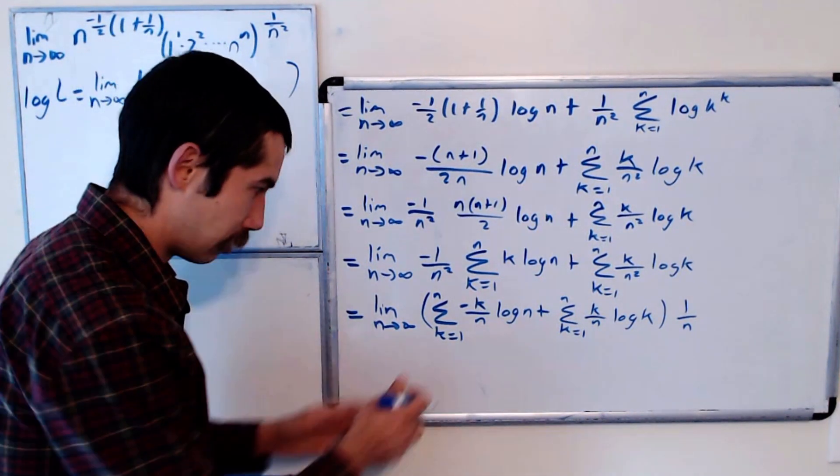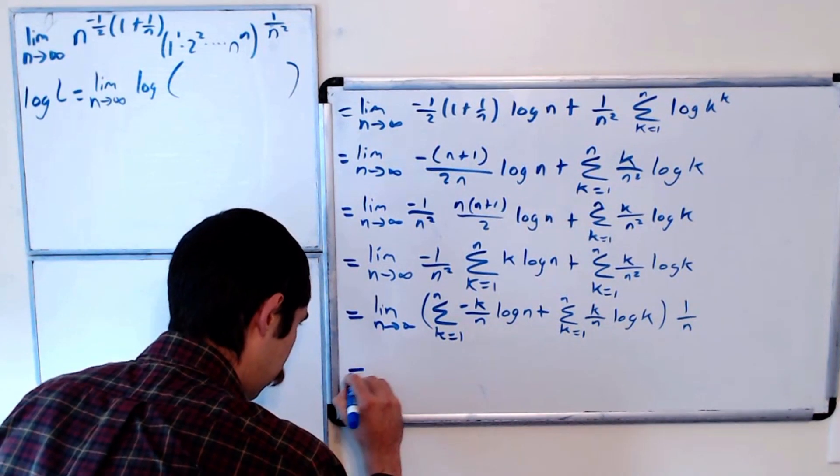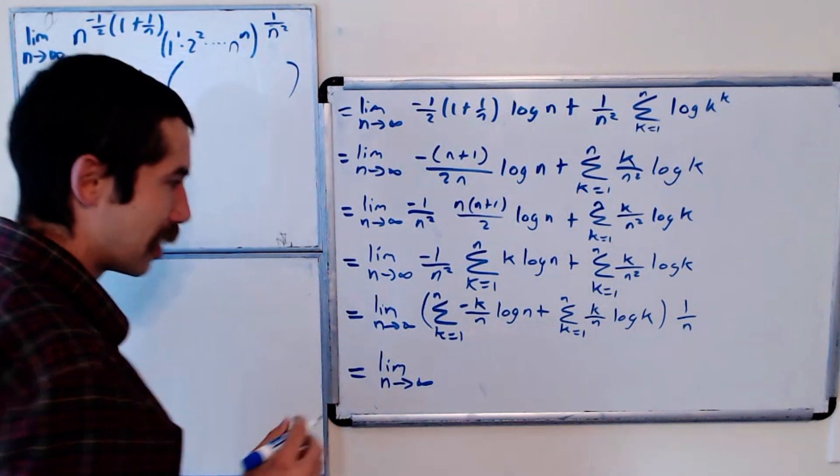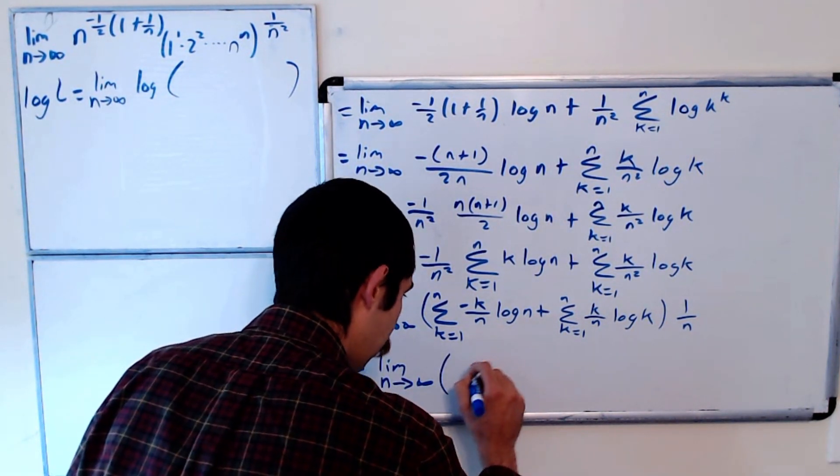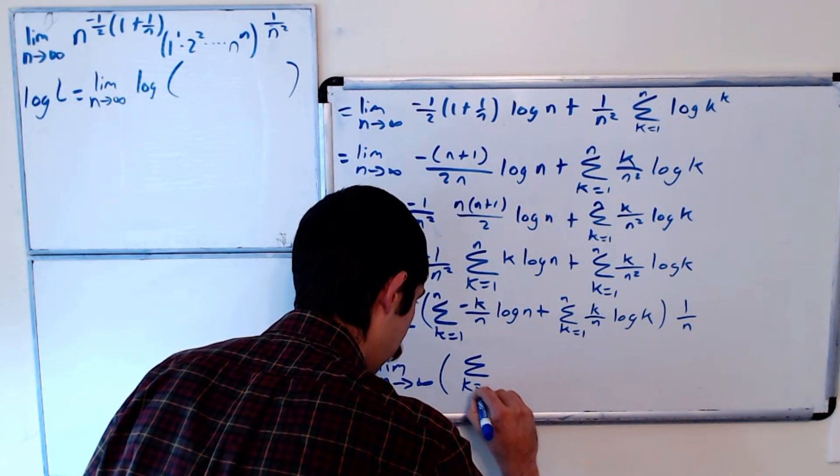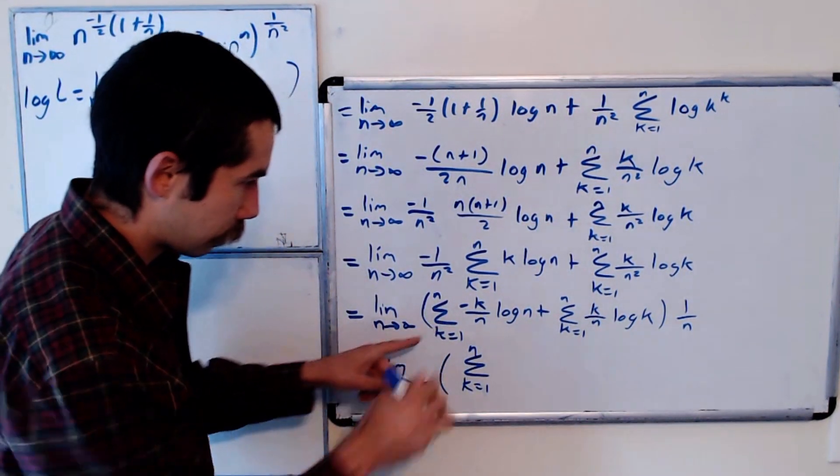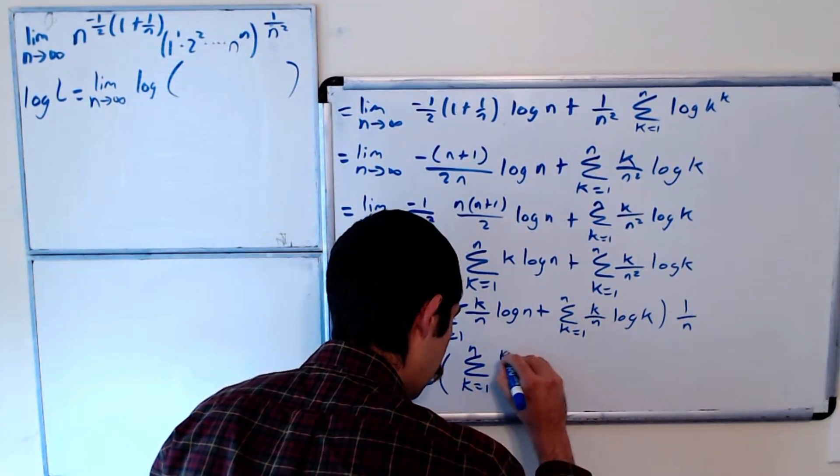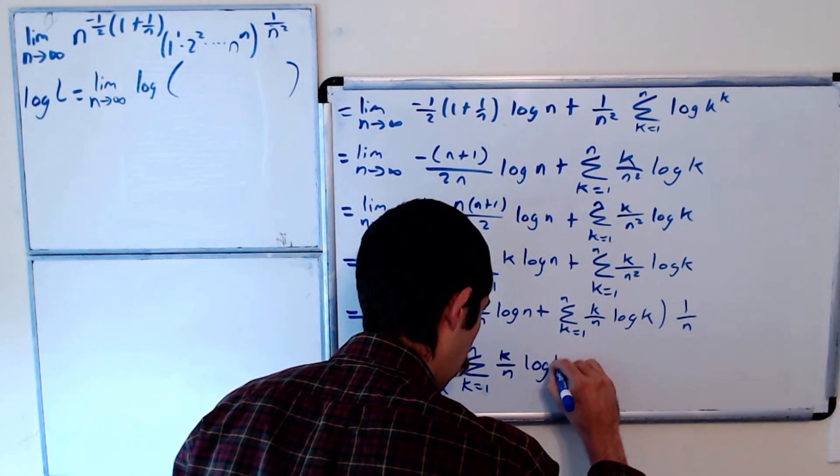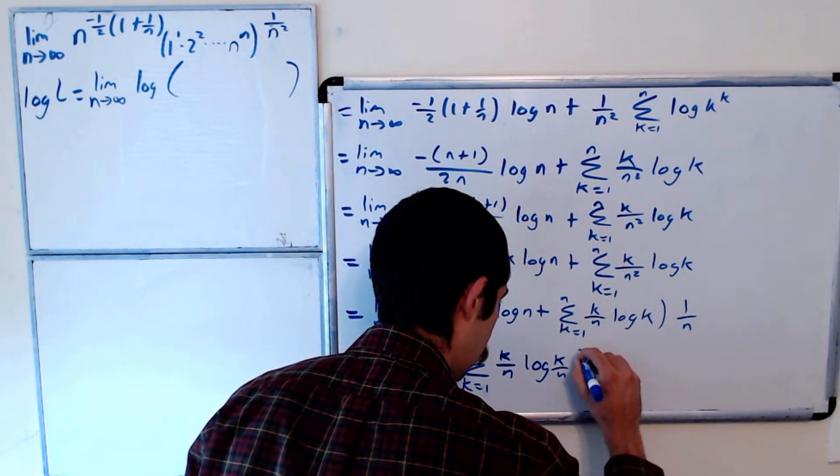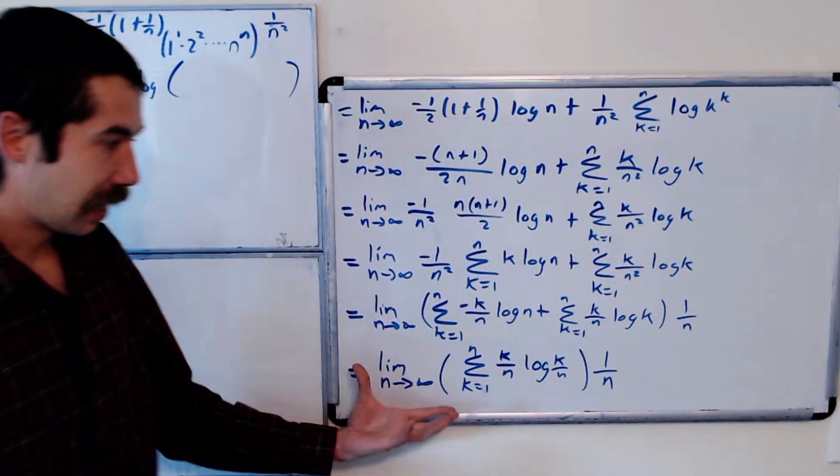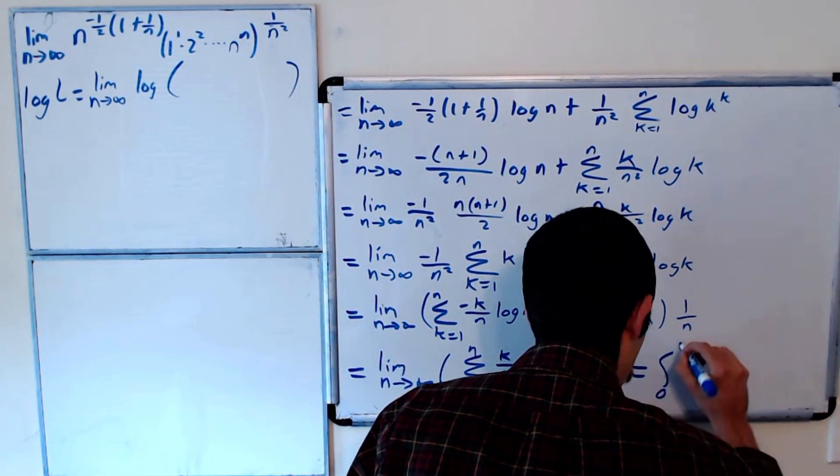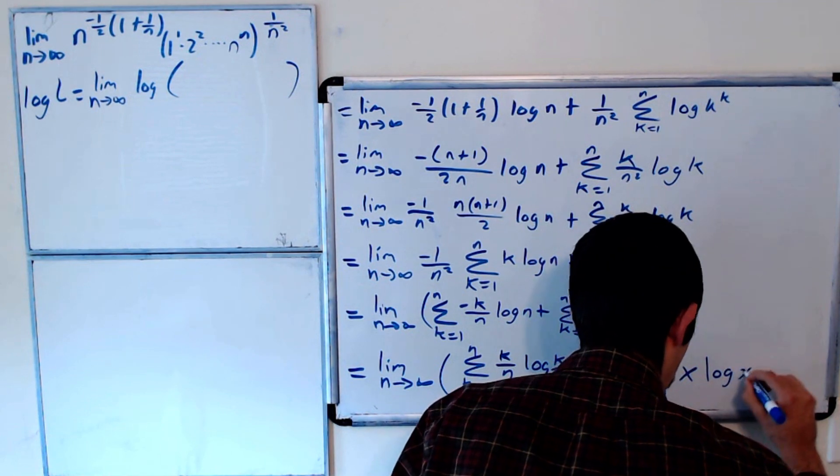Okay, now let's combine this using log rules again—sum rules and log rules. So it's the limit as n goes to infinity of the sum from k equals 1 to n. This negative will put the n in the denominator. Both of these have a k over n. Log k over n times 1 over n. And this here is an integral, right? This is now the integral from 0 to 1 of x log x dx.